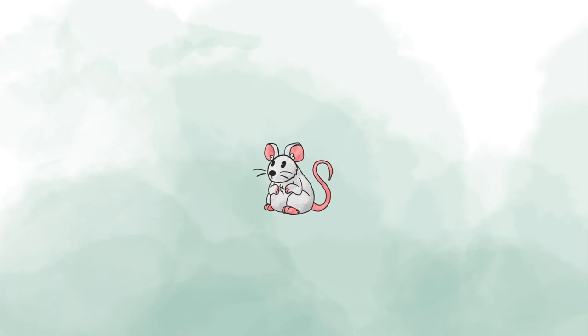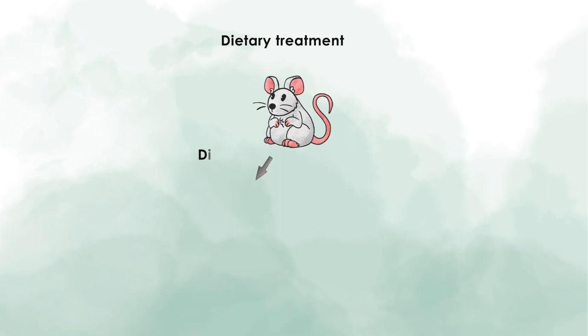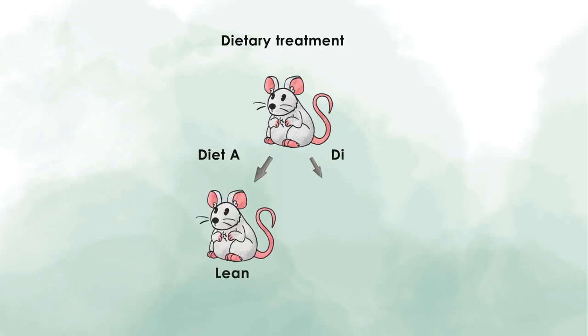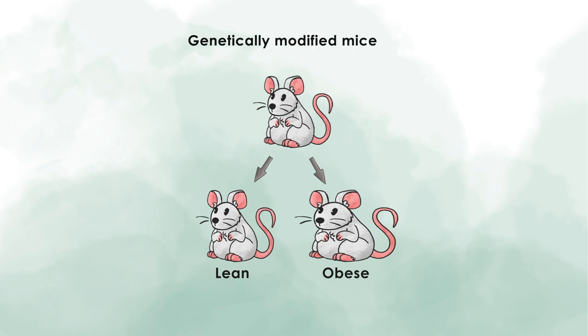This is why researchers often turn to animal models to study parts of the disease, because they can better control the circumstances by which the experiments are set up. For example, animals receive a controlled diet and scientists can study how certain nutrients like lipids or sugars influence the metabolism. Also, researchers have the chance to manipulate a single gene and look at how this affects the whole organism. Even though animal studies are considered controversial, they have contributed a great deal to the understanding of the metabolic syndrome.